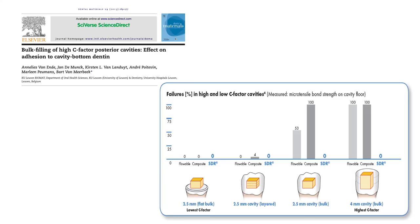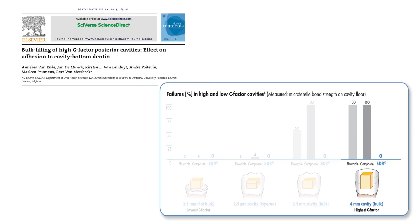Therefore SDR can be placed in 4 mm layers, avoiding cumbersome and time-consuming layering techniques. In a study by van Ende et al. 2013, they demonstrated that micro-tensile bond strength decreased significantly when Class I cavities were filled in 4 mm bulk increments with conventional flowable and regular viscosity composite. The SDR bulk-fill material was the only product that maintained its tensile bond strength against the cavity walls in all samples tested, with shrinkage stress against thick walls of only 1.4 MPa.